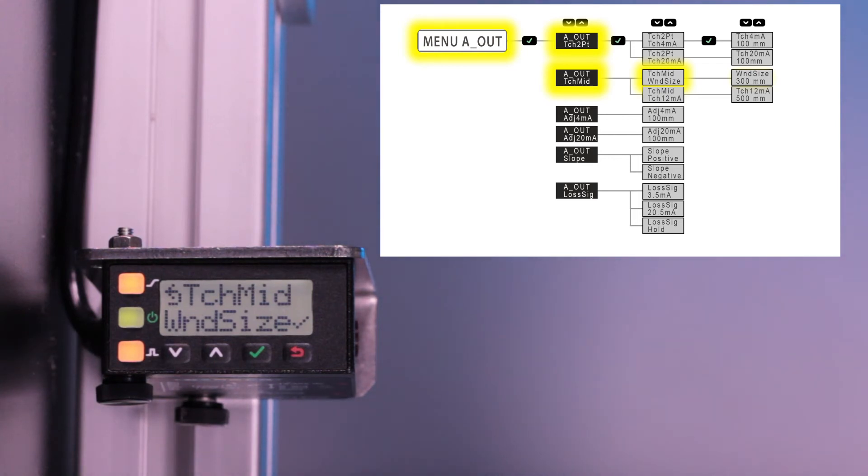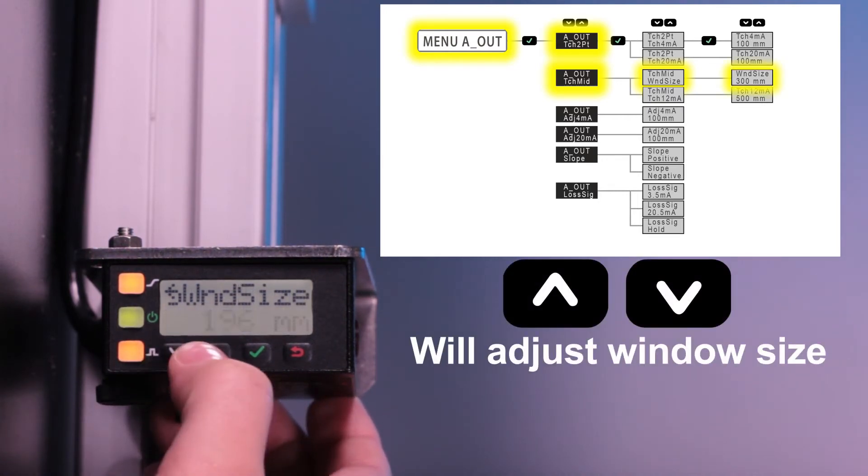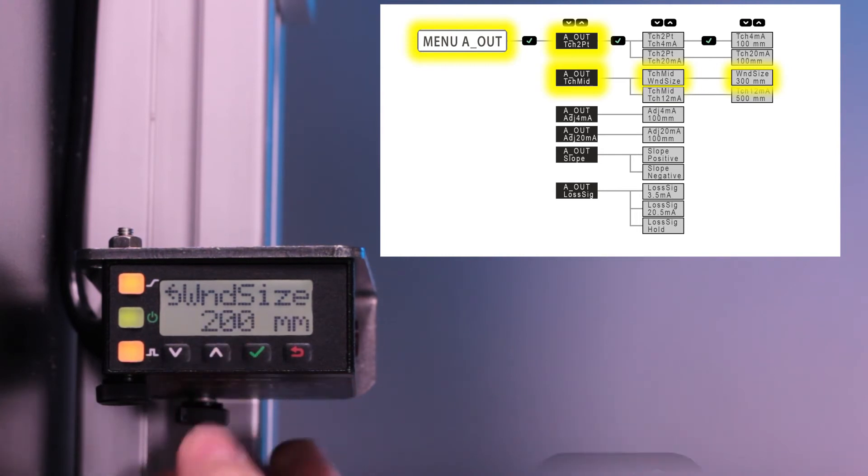When using midpoint teach, first set the size of the window. Click enter to edit the window size. Up and down will change the value. Click enter to confirm the change.